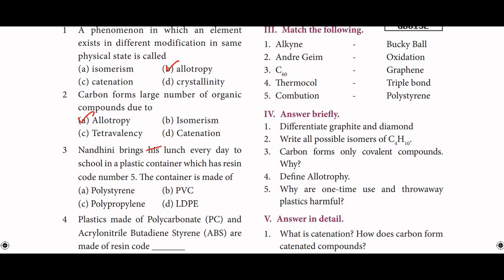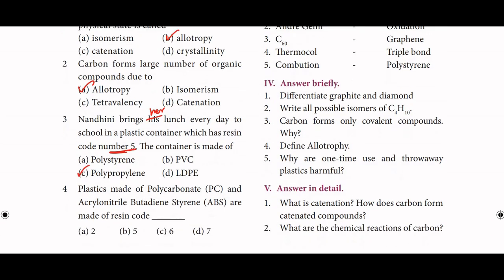Next one: Nandini brings her lunch every day to school in a plastic container which has resin code number 5. So the container is made of — resin code number 5 is polypropylene. Option C.